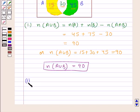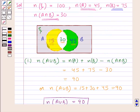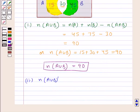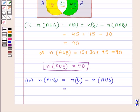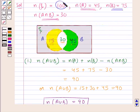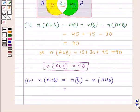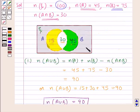Next, we find n(A∪B)'. The gray portion in the Venn diagram represents (A∪B)'. The number of elements in (A∪B)' equals n(ξ) minus n(A∪B), which is 100 − 90 = 10. Thus, the number of elements in (A∪B)' is 10, and we write 10 in that region.